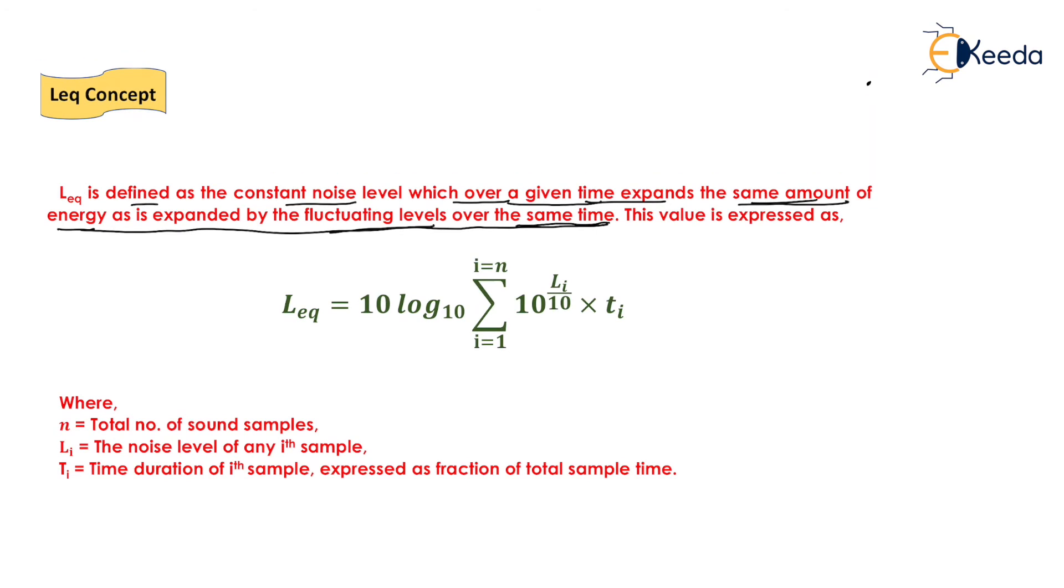This value is expressed as L_eq equals 10 log10, summation i equals 1 to n, 10 to the power L_i upon 10 times t_i. Where n is the total number of sound samples, L_i is the noise level of any ith sample, and t_i is the time duration of ith sample expressed as fraction of total sample time. We have discussed all the fundamental definitions as well as the sound pressure level and characteristic sound concepts and the L-equivalent concept.